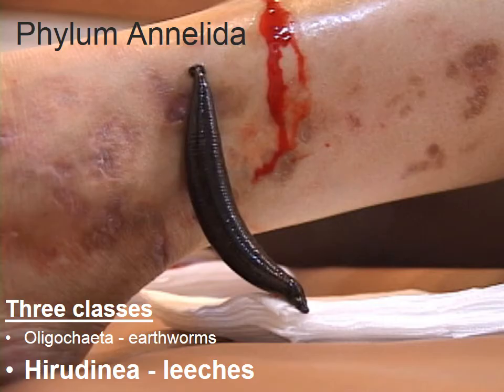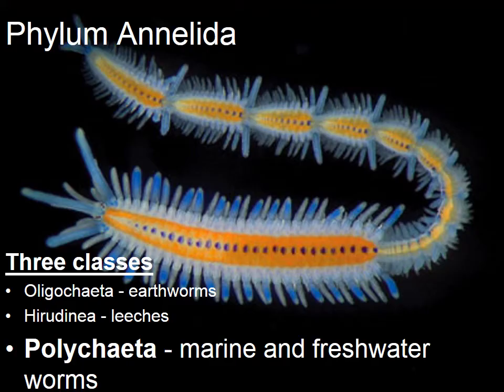Hirudinea, which are the leeches — and this one is actually being used medically, as they are now, to reduce swelling. And finally, Polychaeta, which are the marine and freshwater worms, typically having appendages on each segment.